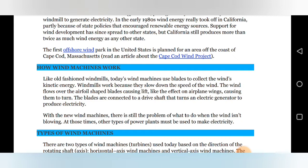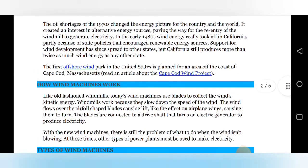So we are going to see how wind machines work. Like old fashioned windmill, today wind machines use the blades to collect the wind kinetic energy. I think all of you have seen the windmills that have the blades that are collecting the winds for producing the energy. Windmills work because they slow down the speed of the wind. The wind flows over the airfoil shaped blades causing the lift like an effect of aeroplane wings causing them to turn. The blades are connected to drive shaft that turns an electric generator to produce electricity. Once blades are moved due to the winds, that blades are moving the generator and due to the moving of generator coils, the electricity will get produced.